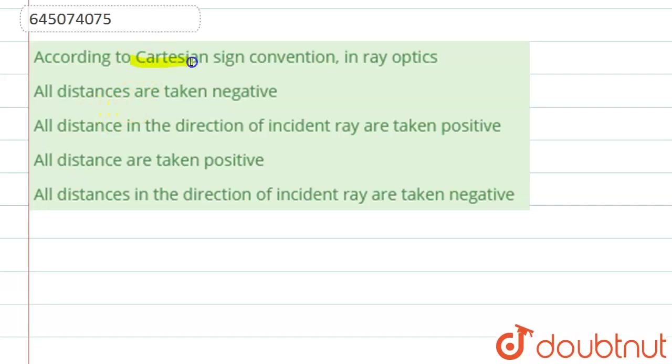Well, hello students. Now we're going to see this question. The question says that according to Cartesian sign convention in ray optics, what are the distances taken? Means distances are taken as negative, positive, or zero.